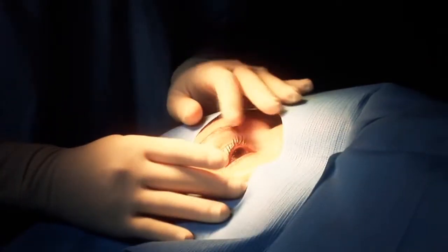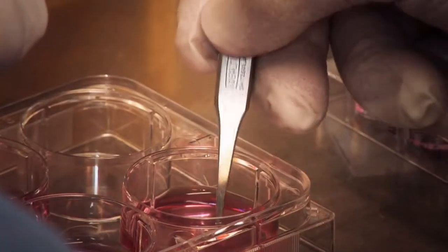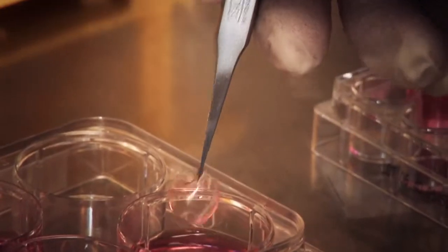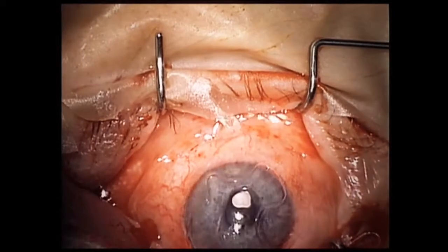This patient's eyesight will be restored. Stem cells from the patient's own eye have been harvested on this simple contact lens. This will be placed on the eye to overcome the damage caused by blinding corneal disease.